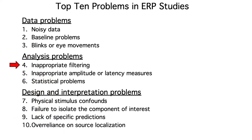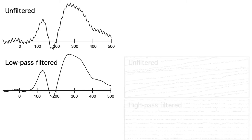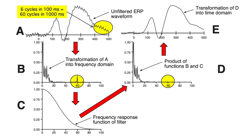Let's start with filtering. Recall that low-pass filters are used to attenuate high-frequency noise, like muscle activity and induced activity from electrical devices in the recording environment. High-pass filters are used to attenuate low-frequency noise, like skin potentials. We can think about filtering in the frequency domain.